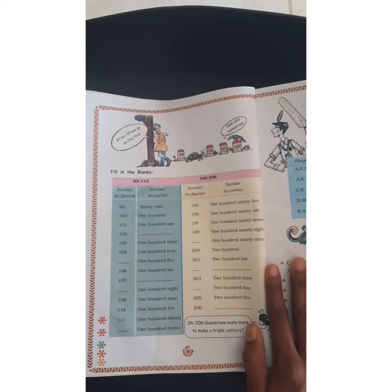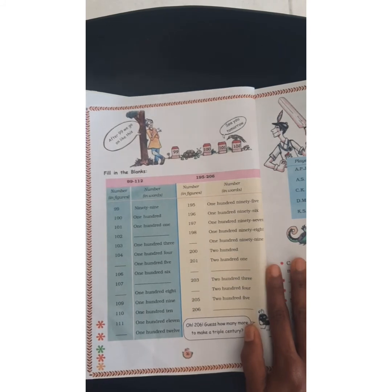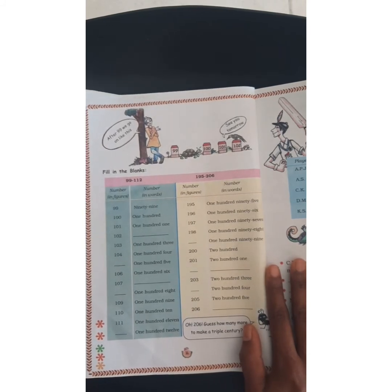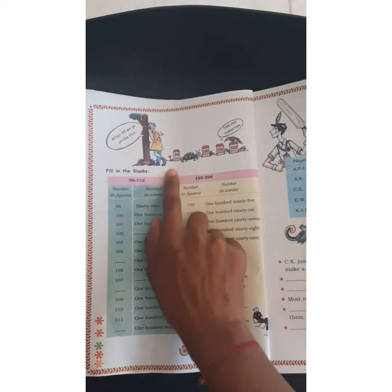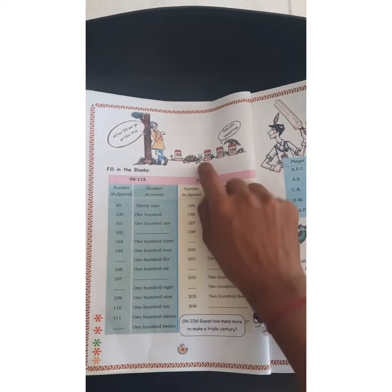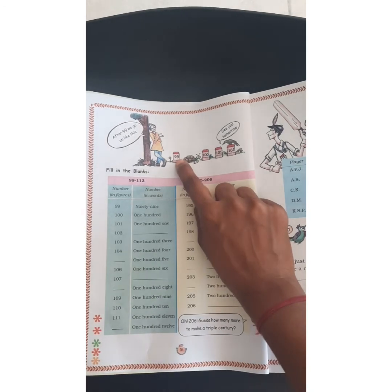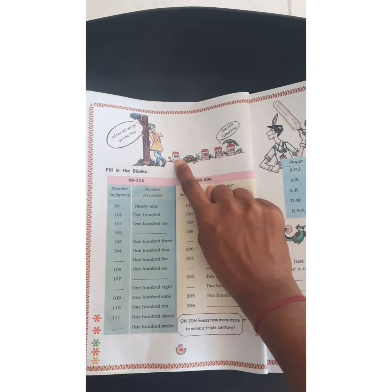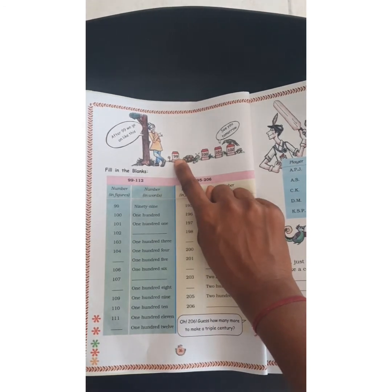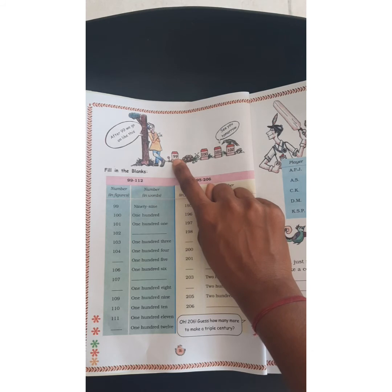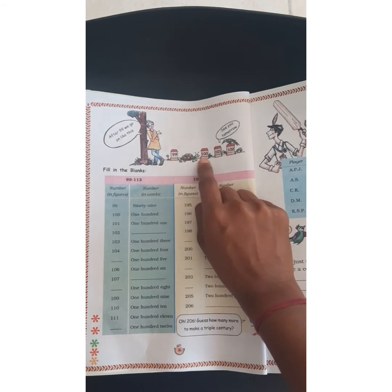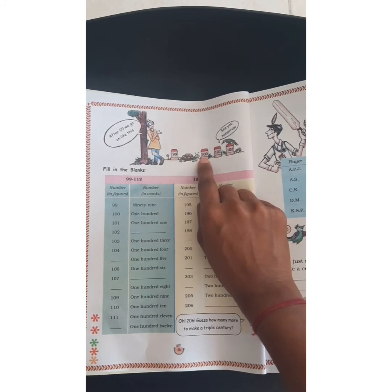Now you are going to learn more. Look at this — 99 means 100. 99 is the biggest two-digit number. The smallest three-digit number is 100.